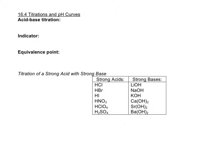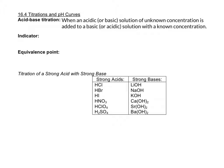So the first thing is: what is an acid-base titration? An acid-base titration is when you have a basic or acidic solution of known concentration, and it reacts with either an acidic or basic solution of known concentration. So if it's basic, it would react with an acidic solution, and if it was acidic that you started with, you would have a basic solution.